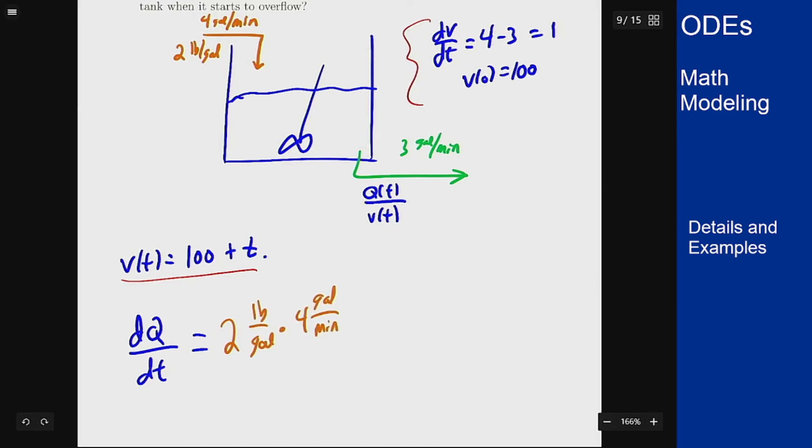We have inflow stream 2 pounds per gallon times 4 gallons per minute will give us a flow rate in pounds per minute. That's inflow and then our outflow will be 3 gallons per minute times Q over V(t).